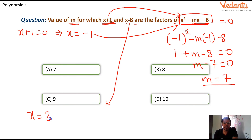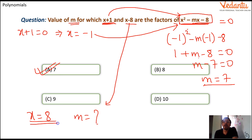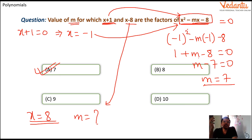So m = 7 is the value that makes the polynomial divisible by x + 1. Now similarly we have to find the value of m for x = 8. You should put x = 8 into the polynomial and get the value of m. This is also your homework — keep commenting and tell me the answer. I want you to engage in this session like a real class.